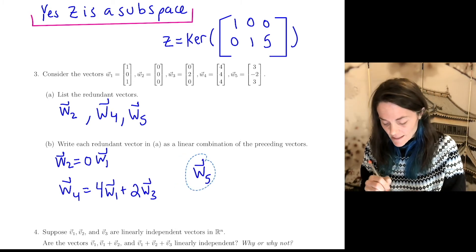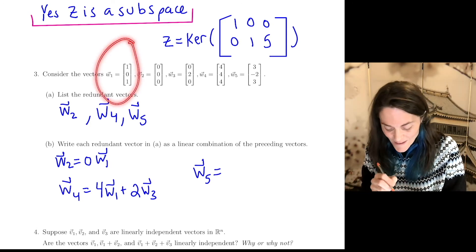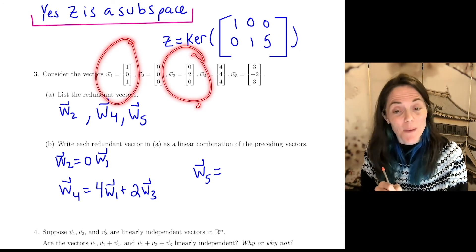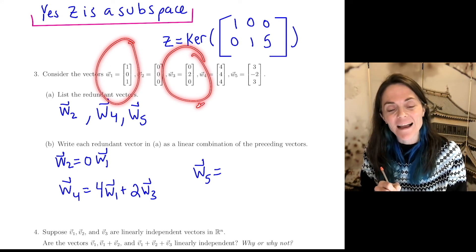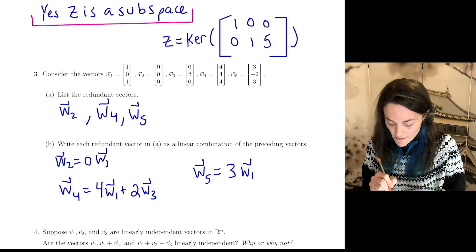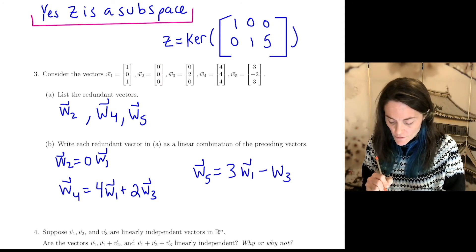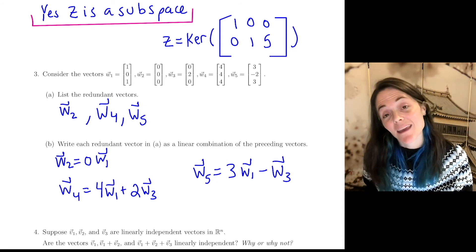And finally, we see W5. Once again, this is by inspection. We see W5 is 3W1 minus W3. This is 3W1 minus W3. So this is our answer in letter B.